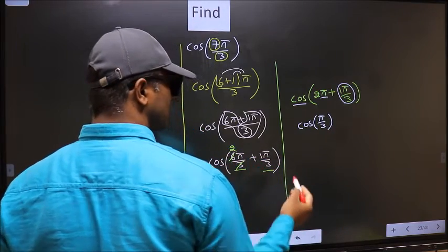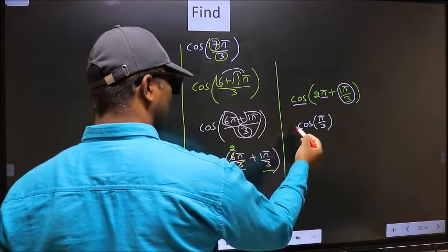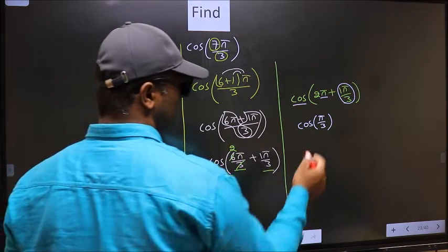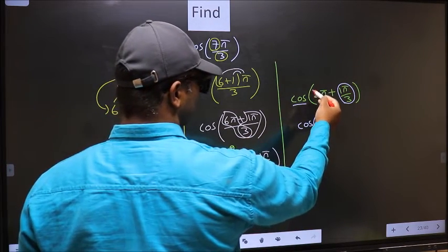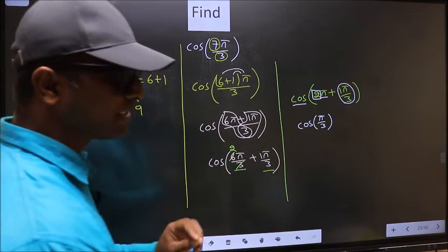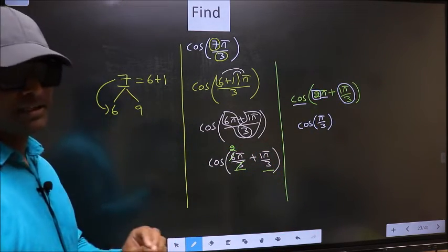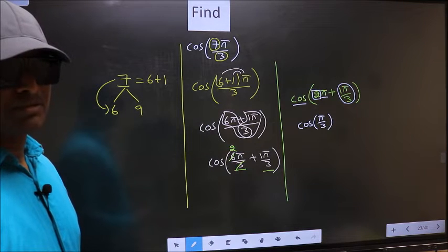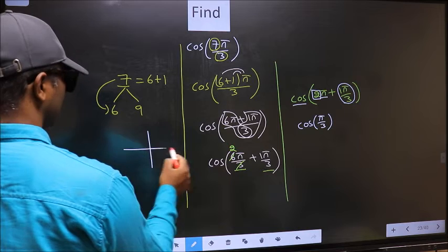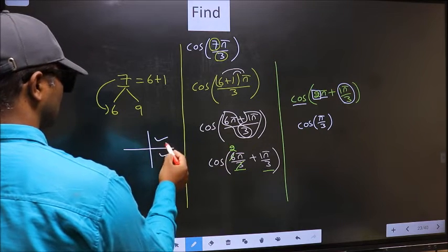Now the question is, will we get here plus or minus? To answer that, you should look at the number before π, which is 2. And 2 is even and all the even multiples of π...